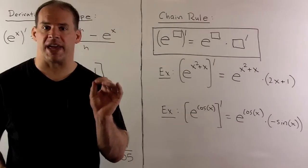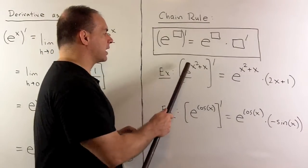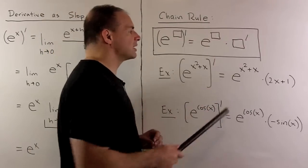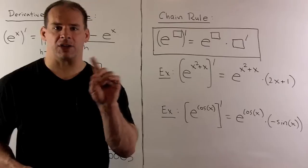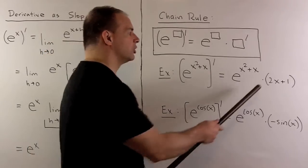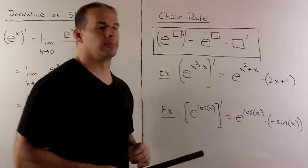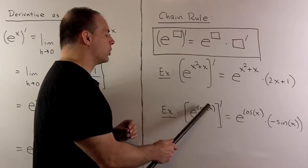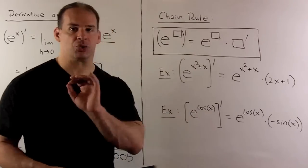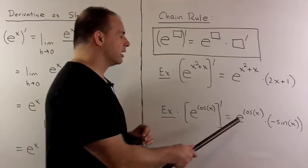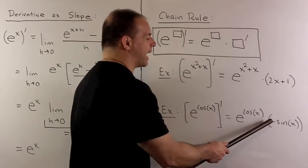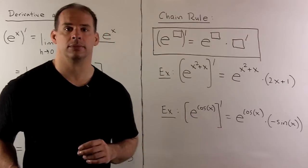For some straightforward examples, if I have e to the x squared plus x, what do we do? We just rewrite it, so I have e to the x squared plus x. Then, we take the derivative of the exponent. So, that's going to give me 2x plus 1. If we take the derivative of e to the cosine x, we just rewrite it, e to the cosine x. Then, we multiply by the derivative of the exponent. So, I get minus sine x.